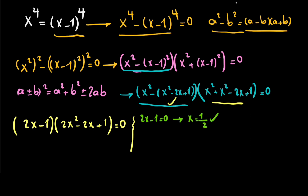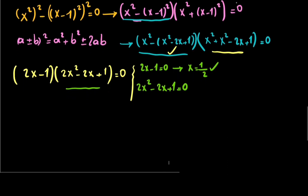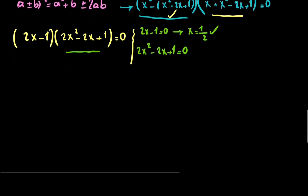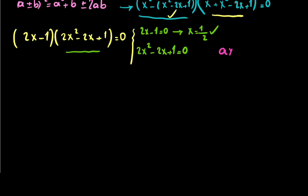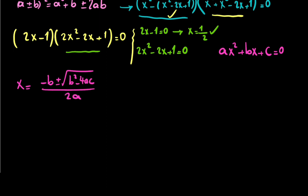The second equation is 2x squared minus 2x plus 1 equals 0. We use the quadratic formula: for ax squared plus bx plus c equals 0, x equals (minus b plus or minus the square root of b squared minus 4ac) divided by 2a. I prove this in one of my videos and put the link in the description.